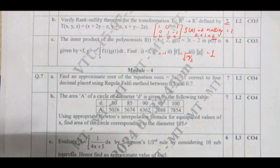Going to question 7a: find the approximate root of the equation cos x = 3x − 1, correct to 4 decimal places, using the Regula Falsi method between 0.5 and 0.7. The answer is approximately 0.607. If you got this answer, it carries 7 marks.